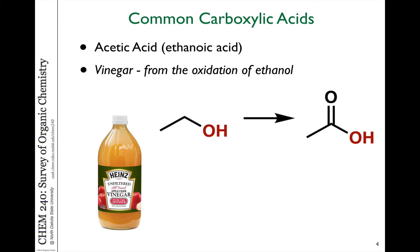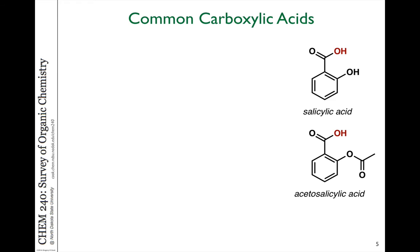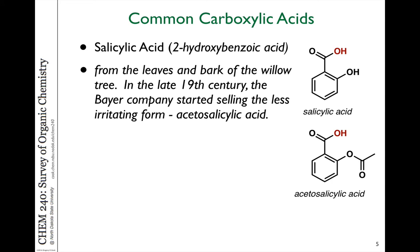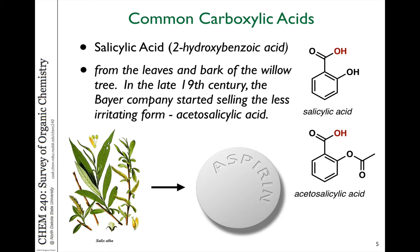The tartness you get from vinegar is because of the acidity of the carboxylic acid group. Another important naturally occurring carboxylic acid is derived from 2-hydroxybenzene, more commonly known as salicylic acid, found in the bark and leaves of the willow tree. This is the foundation of the drug aspirin, which the Bayer company produced in the 19th century by taking salicylic acid and acetylating the OH group to make acetylsalicylic acid — a compound easier on the stomach. These compounds have been used for centuries for pain relief.